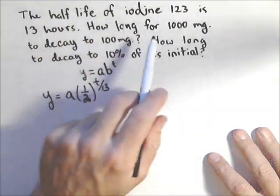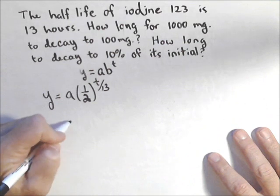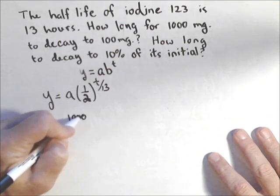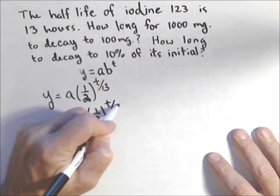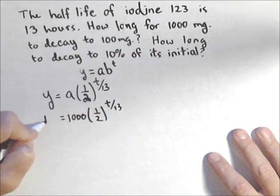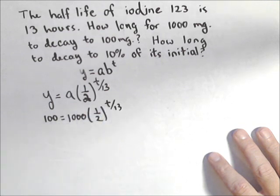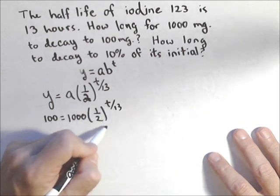So the first problem says how long does it take for 1,000 milligrams to decay down to 100. So I'm gonna put in 1,000 for my initial, 100 for my final after T, and now I'm solving for T.